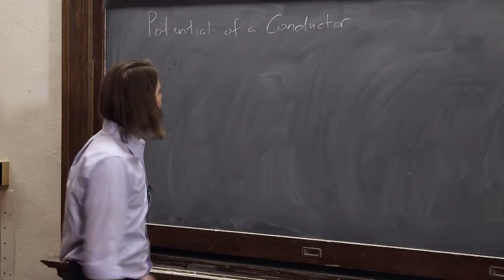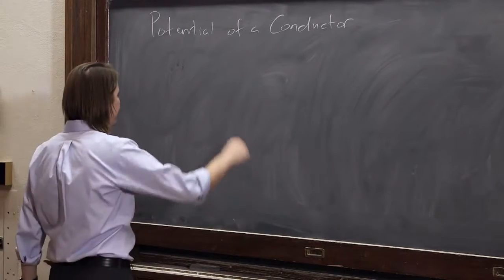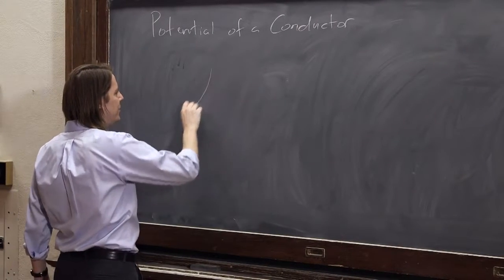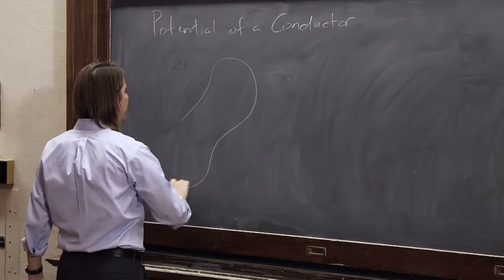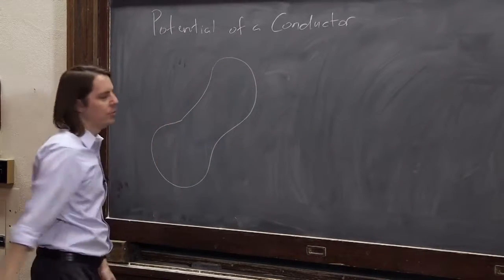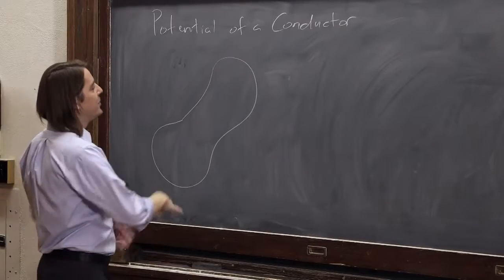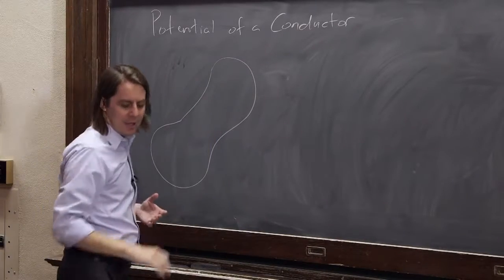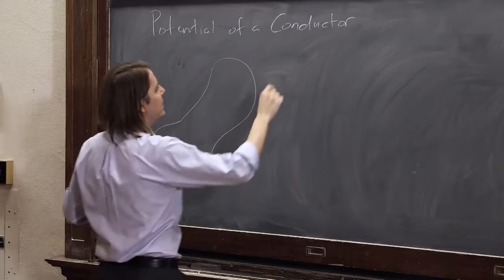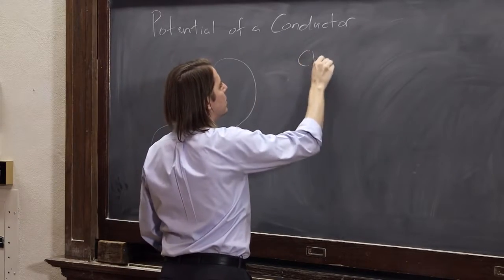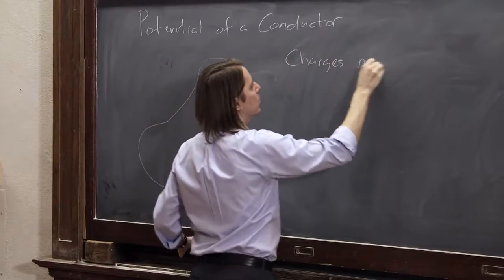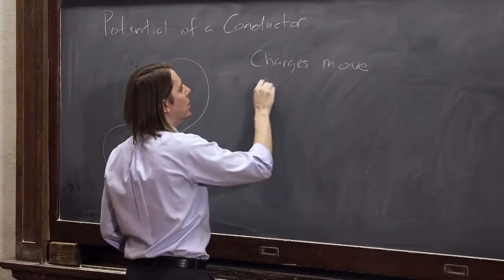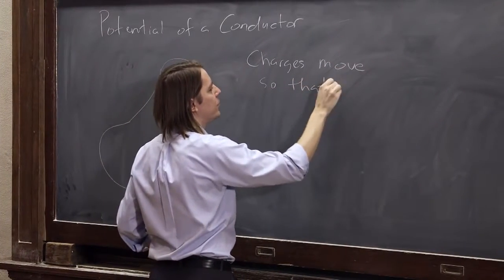So we talked about the electric field around a conductor. We said if you have just a charged sort of piece of lumpy conductor, doesn't matter too much the exact shape. And if you put charge on it, we talked about what's going to happen is in a conductor, the charges move so that two things are true.